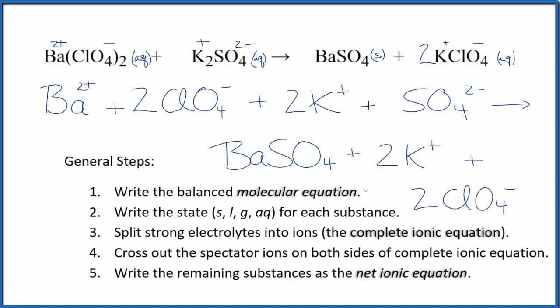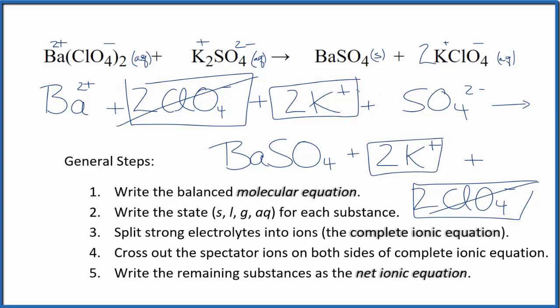So this is the complete ionic equation. Now we can cross out the spectator ions. I see we have 2 perchlorate ions here in the reactants and in the products. Those are spectator ions. We're going to cross those out. 2 potassium ions in the reactants, 2 in the products. Spectator ions, cross them out.